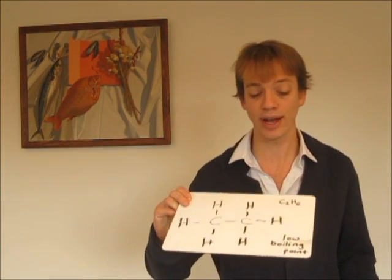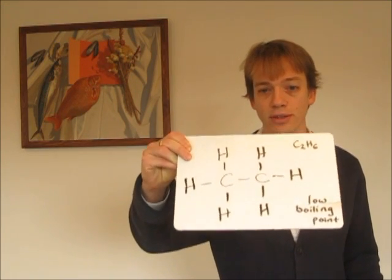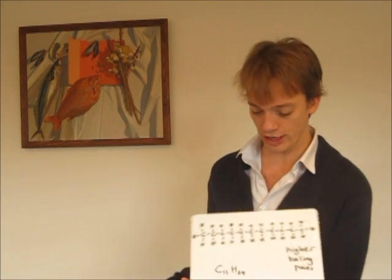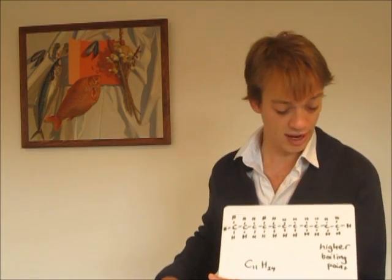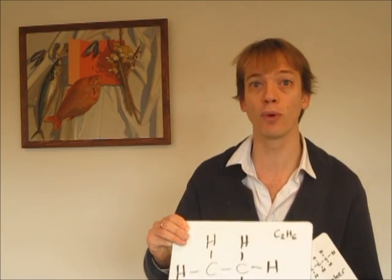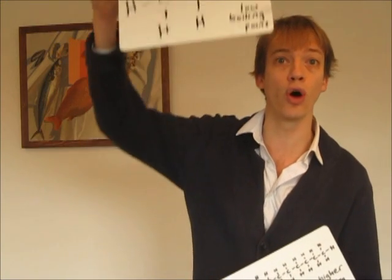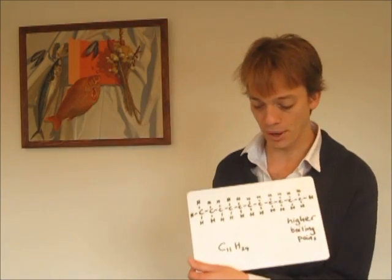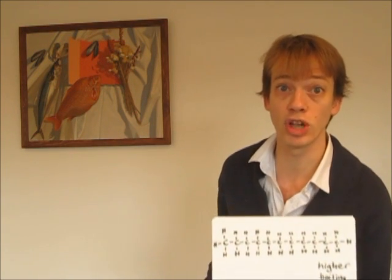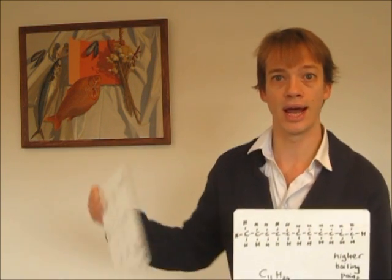Here we have a very short chain hydrocarbon — ethane — with just two carbon atoms, and that has a low boiling point. Then there's a longer chain hydrocarbon with 11 carbon atoms, which has a higher boiling point. If we heat up the mixture in a fractionating tower, the short chain molecule with the low boiling point goes to the top, while the longer chain molecule goes lower down the column towards the bottom.